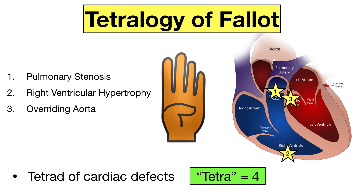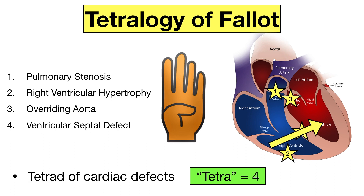The overriding aorta sits on top of the ventricular septal defect, which is a hole in the wall between the right and left ventricle. The pulmonary stenosis, right ventricular hypertrophy, and ventricular septal defect can alter pressure gradients and allow oxygen-poor blood to travel from the right ventricle to the left side of the heart, leading to cyanosis. Use four fingers to remember tetralogy of Fallot and how there is a tetrad of four cardiac defects.